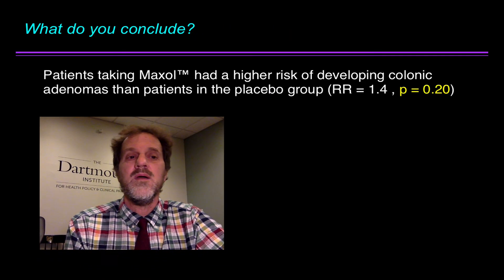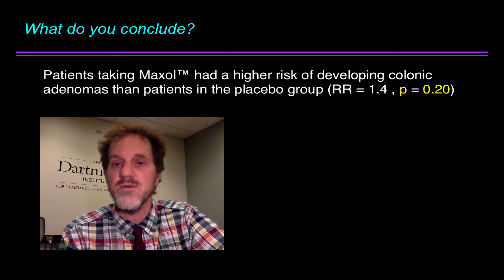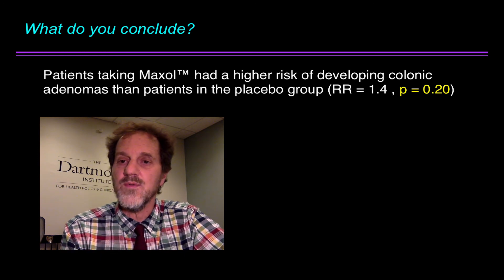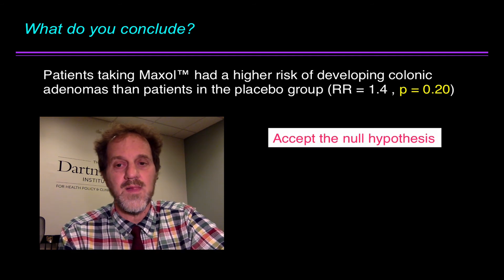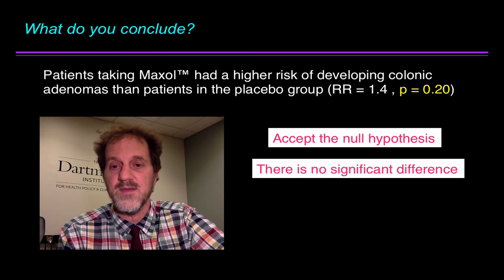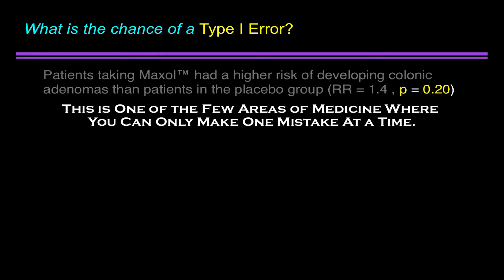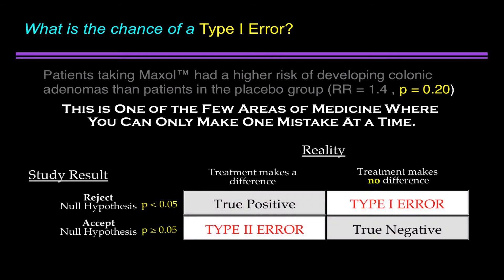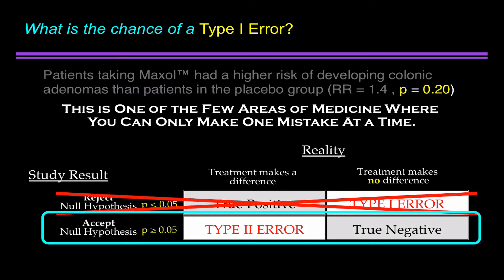New study: patients taking Maxol had a higher risk of developing colonic adenomas than patients in the placebo group — RR equals 1.4, p equals 0.20. What do you conclude? You accept the null hypothesis. You assert there is no significant difference. What's the chance of a type 1 error? It's a trick question. This is one of the few areas of medicine where you can only make one mistake at a time. You're down on this row — you can't be up here. Once you've accepted the null hypothesis, you cannot make a type 1 error.